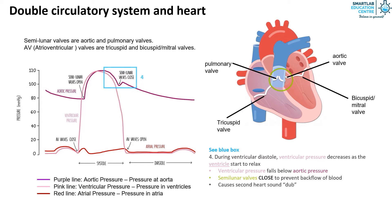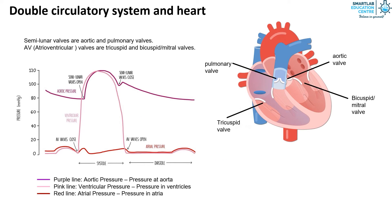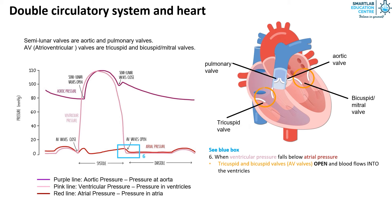In the fifth stage, the ventricular pressure continues to fall until it is below the atrial pressure. In the sixth stage, this causes the AV valves to open and blood flows into the ventricles. The filling of blood in the ventricles is also known as passive ventricular filling.